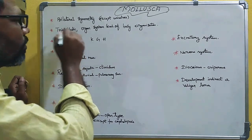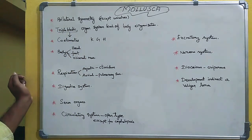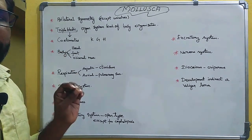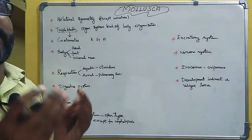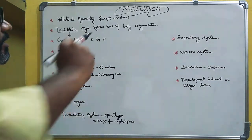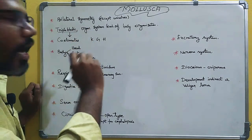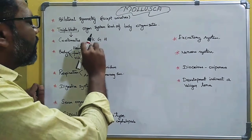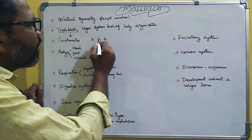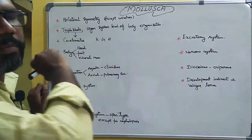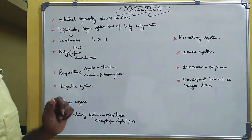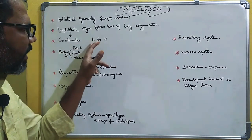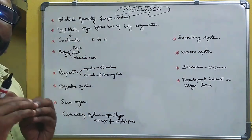There is a presence of coelom, but in mollusca the coelom is restricted. The body cavity is restricted only to the cavity around the kidney, gonads, and heart — remember as KGH. Only those cavities are present.